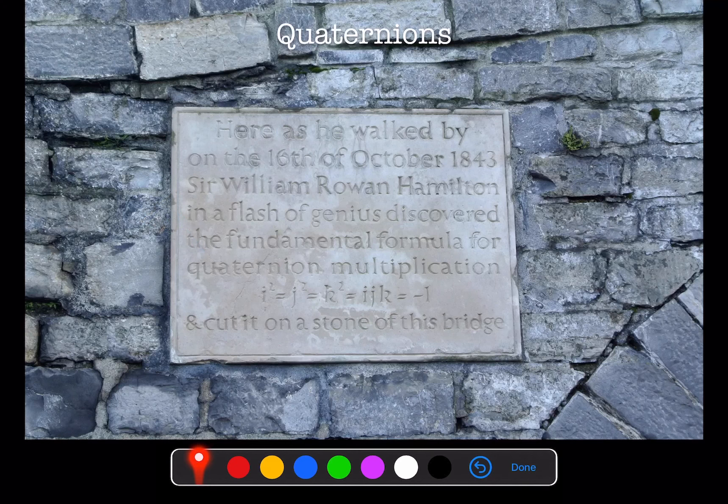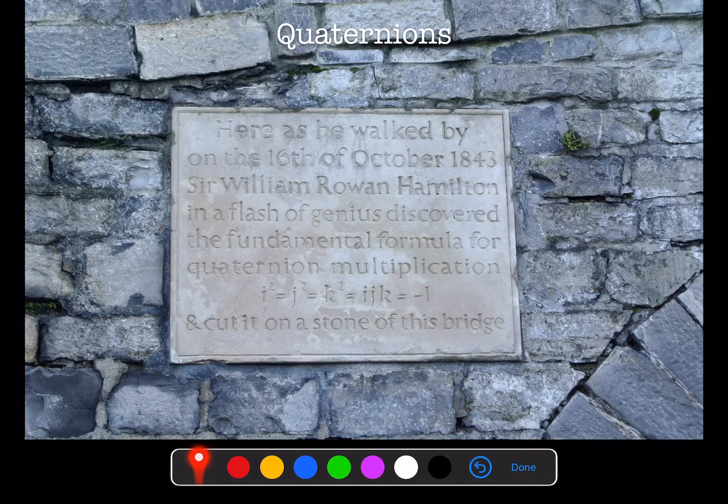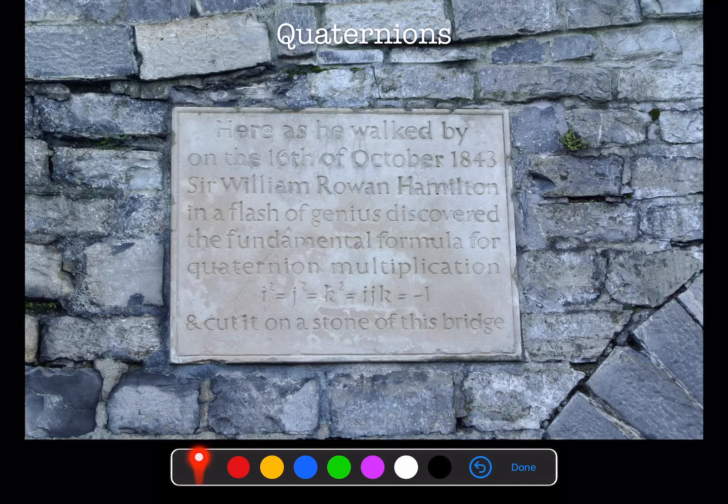Quaternions were discovered in 1843 by William Hamilton of Hamiltonian fame. He had been trying to understand how to extend the complex numbers to higher dimensions. At first, he tried to do this with two complex quantities, i and j. He just couldn't seem to get the algebra to work out.